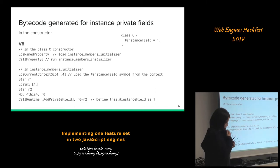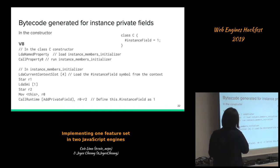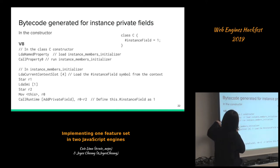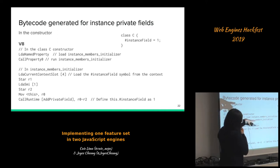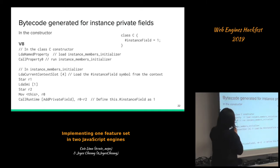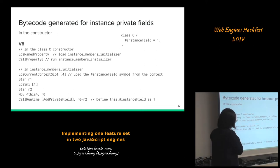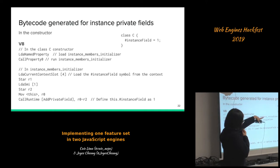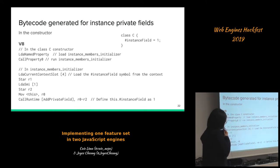In V8, during instantiation of the class, we first load the instance member initializer from the class constructor using the special symbol, then call it. In the initializer we load the private symbol for that field from the context using the statically-known slot index. We evaluate the initializer expression — which is 1 in this case — and then call into another runtime function 'add-private-field' to add the result of the initializer to the instance as a property.